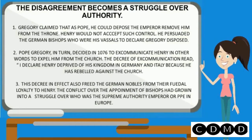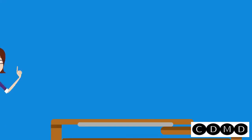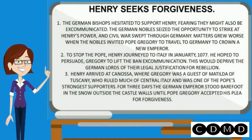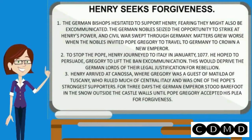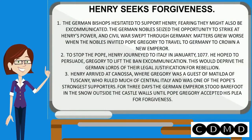The decree of excommunication declared Henry deprived of his kingdom in Germany and Italy because he had rebelled against the church. The German bishops hesitated to support Henry, fearing they might also be excommunicated. The German nobles seized the opportunity to strike at Henry's power, and civil war swept through Germany. Matters grew worse when the nobles invited Pope Gregory to travel to Germany to crown a new emperor. To stop the Pope, Henry journeyed to Italy in January 1077. He arrived at Canossa, where Gregory was a guest of Matilda of Tuscany. For three days, the German emperor stood barefoot in the snow outside the castle walls until Pope Gregory accepted his plea for forgiveness.